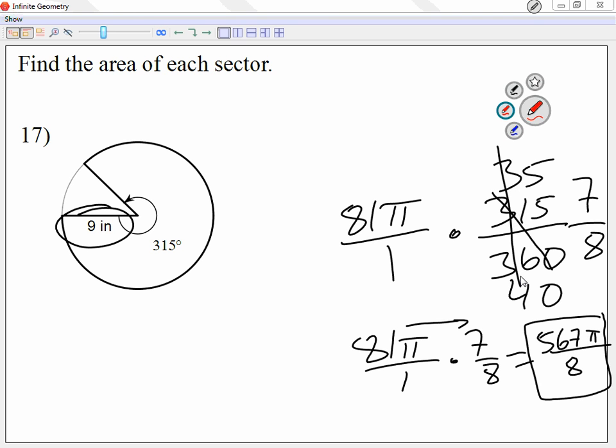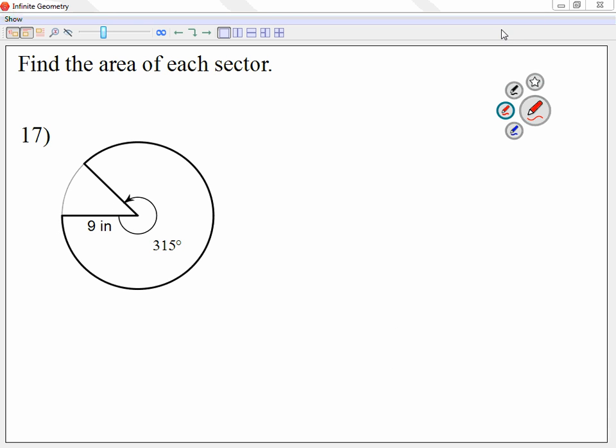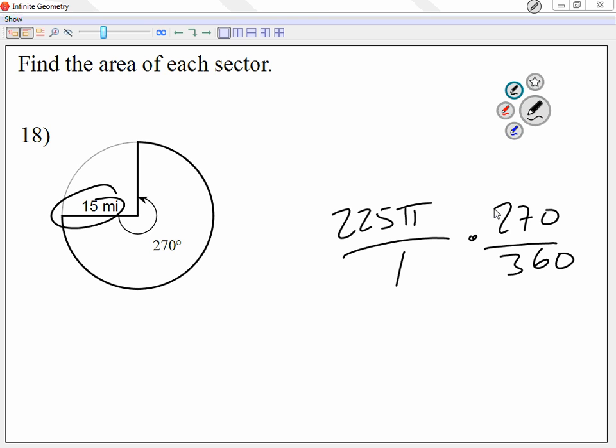Looking at number 18, let's see. I know the radius is 15, and I know 15 squared is 225. So let me write this as 225 pi over 1, and multiply this by 270 over 360. When I'm simplifying my fractions, divide by 10. That basically cancels the zeros. 27 over 36. Let me divide each by 9. So I have 3 over 4.